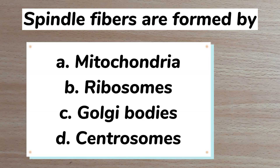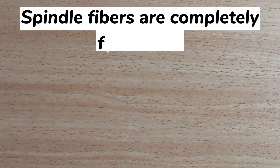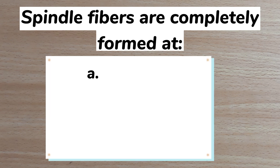Number 8. Spindle fibers are formed by: A mitochondria, B ribosomes, C Golgi bodies, D centrosomes. Answer: D centrosomes.